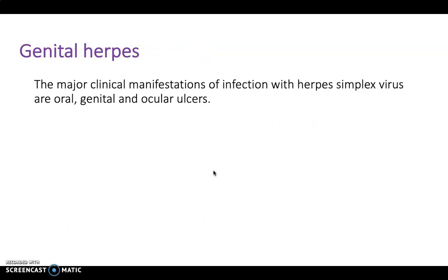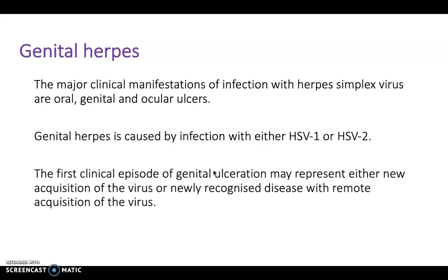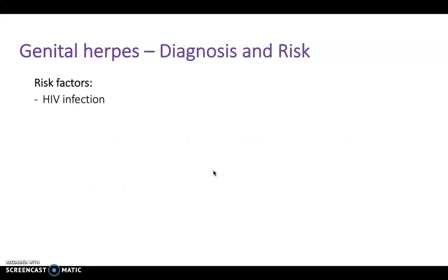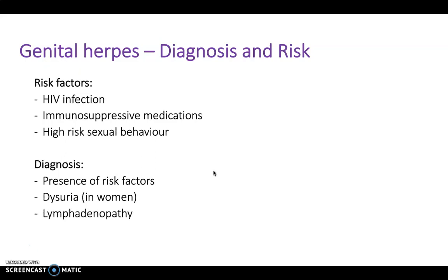Genital herpes is caused by infection with either HSV1 or HSV2. The major clinical manifestations are oral, genital, and ocular ulcers — oral and genital are most commonly seen in practice. The first clinical episode may represent either new acquisition of the virus or newly recognised disease from a remote acquisition. Risk factors include HIV infection, immunosuppressive medications, and high-risk sexual behaviour. On diagnosis, look for dysuria in women, lymphadenopathy, a genital ulcer, and oral ulcers.